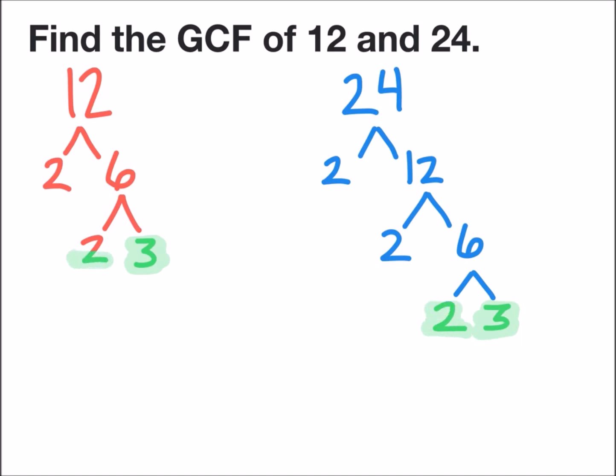The factor trees also have 2 pairs of 2's. In order to find the greatest common factor, I need to write down the common factors and find their product down below. The greatest common factor or GCF equals 2 times 2 times 3. We can simplify that to the greatest common factor of 12 and 24 is equal to 12.